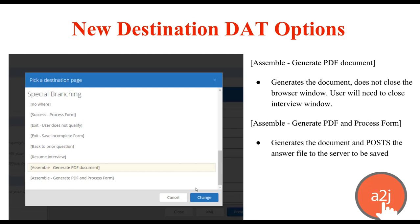The second option, assemble generate PDF and process form, generates the document to the end user's local machine and posts the answer file to the server to be saved. This is similar to success process form. If you've worked with A to J Author before as a front end for HotDocs and you want to save and capture the end user's answer file — to allow them to come back later, see their saved answer file, or process it in your case management form — this is the option you need. Assemble generate PDF just creates a document for the end user; assemble generate PDF and process form creates the document and sends the user's answer file on to somewhere else.